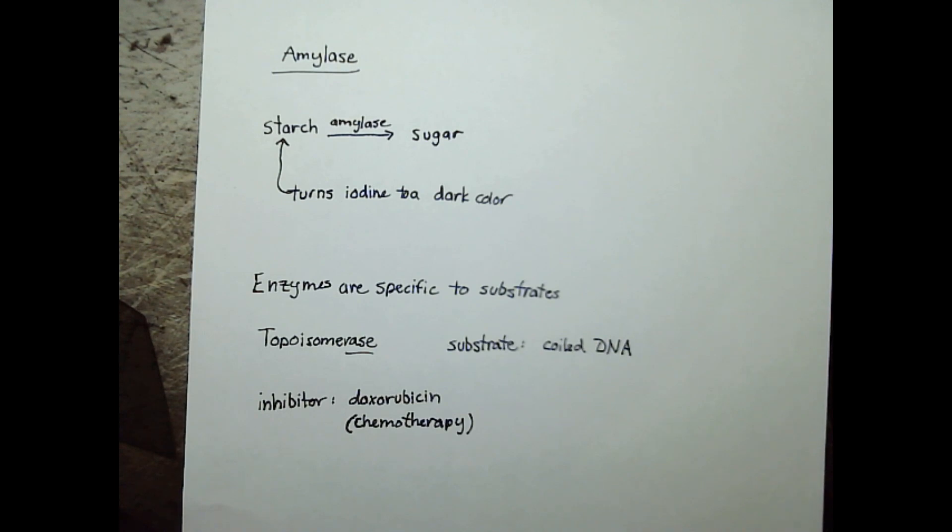If starch is present, that's also a carbohydrate polymer, we should see the gold amber iodine color turn into a dark solution. What our hope is is that our amylase will break down all of the starch and we won't see that color change.